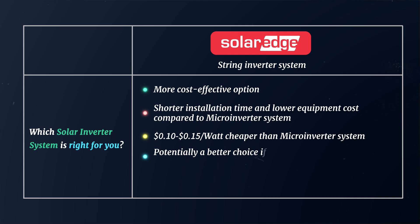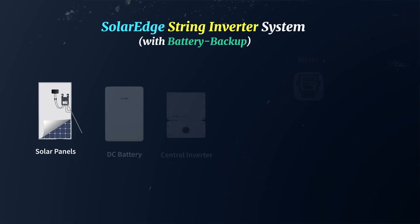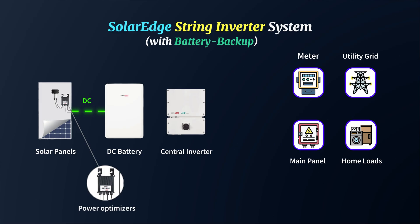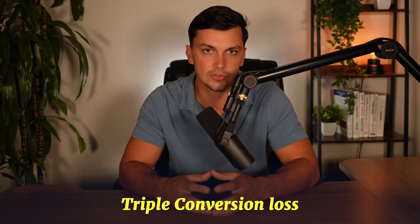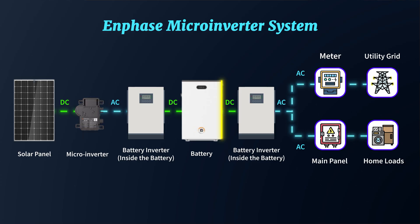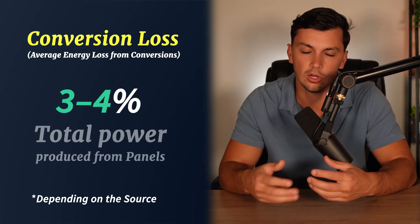SolarEdge also stands out as potentially a better choice if you plan on incorporating a large battery backup storage system into your project. Since all batteries store energy in direct current — DC — a SolarEdge system works seamlessly by allowing the panels to generate power in DC, which can then go directly into charging the battery without requiring an additional conversion. With an Enphase system, however, this process looks different. While the batteries still store power in DC, the Enphase system converts the power to AC immediately on the roof using the microinverters, leading to what we refer to as the triple conversion loss. The panels generate DC, the microinverters convert it to AC, then the battery converts that AC back to DC to store the energy, and when the stored power is needed, it's converted again from DC to AC for use in the house. The average energy loss from these conversions is about 3 to 4% of all the power produced from the panels.